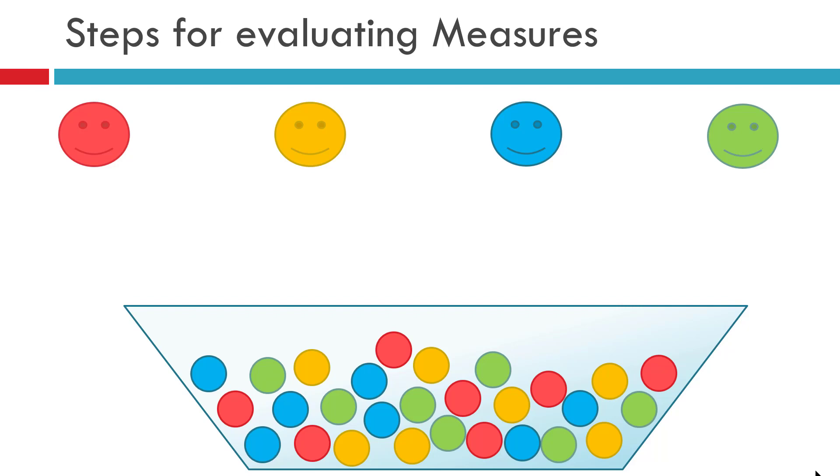To count these balls from this particular jar, each person will follow a three-step process. The first step is that each person has to decide what color ball they are going to be counting. Here each one of them has their own favorite color, so they will be counting the balls of that color only.